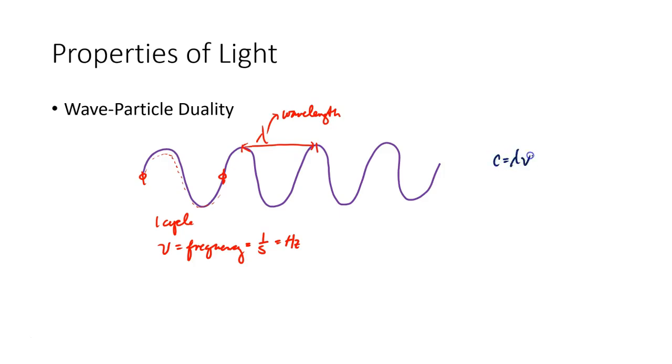c equals lambda nu, where c is the speed of light, and that's 3.0 times 10 to the 8th meters per second, so if you're using this equation you better make sure the units for wavelength are in meters.